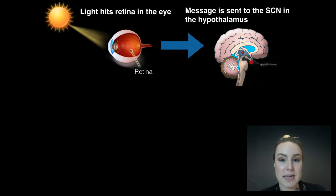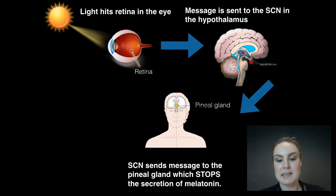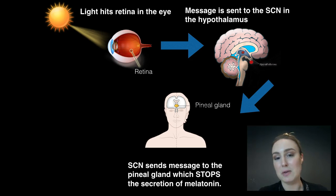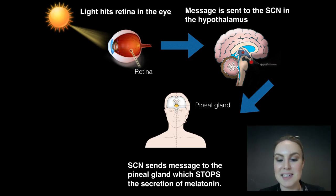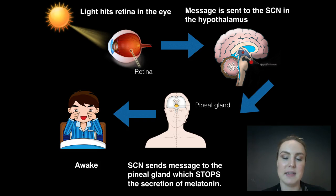Once the light hits the retina in your eye — you can see it traveling through the front of the eyeball to the retina — this message is sent to the SCN in the hypothalamus, which is labeled there in the middle. The SCN then sends a message to your pineal gland, and this stops the secretion of melatonin. Really important that you have this process written or drawn in your book, because it is quite detailed. Melatonin actually makes you sleepy, so when waking up you want that message to stop its secretion, and this leads to you being awake.